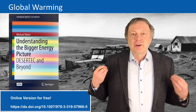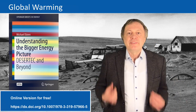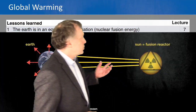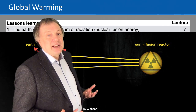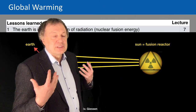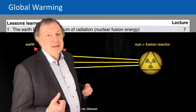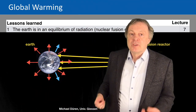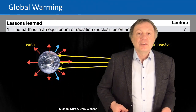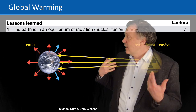So what is global warming about? All the ingredients you have to understand you learned already in the previous lectures. First of all, we learned that the Sun is a nuclear fusion reactor. The Sun produces energy at very high levels, so it produces light and also other kinds of electromagnetic radiation. The light here is shining to the earth, so the earth is in an equilibrium of the radiation which it gets from the Sun.